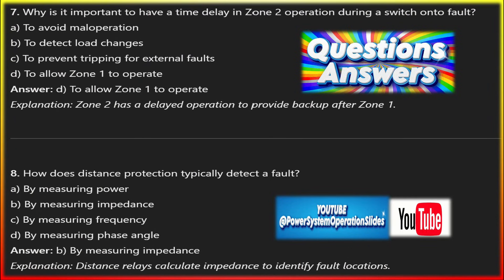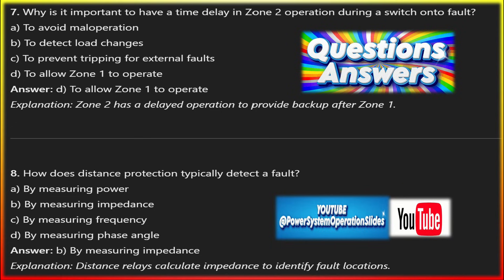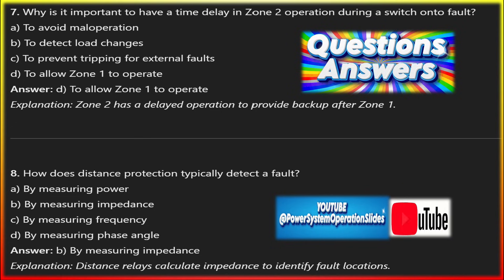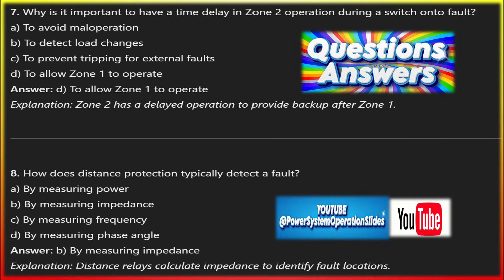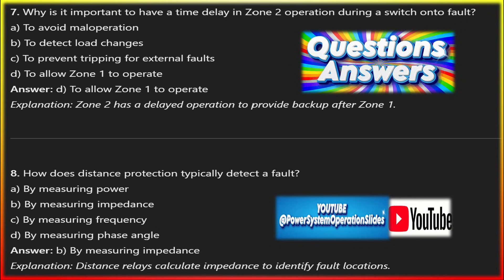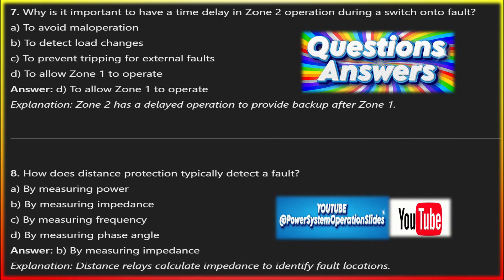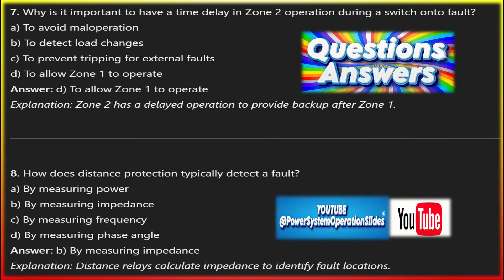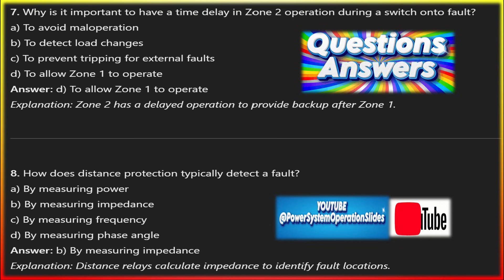Long transmission lines can have significant capacitance, which can lead to charging currents when the line is energized. The relay must differentiate between these charging currents and fault currents. Modern IEDs like the REL670 incorporate algorithms to factor in line capacitance and ensure proper operation of the SOTF function.